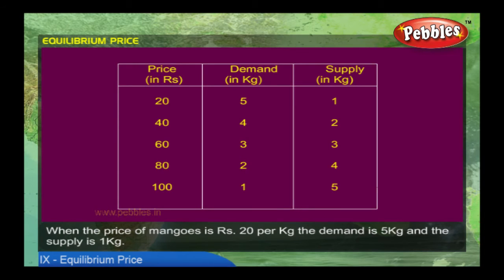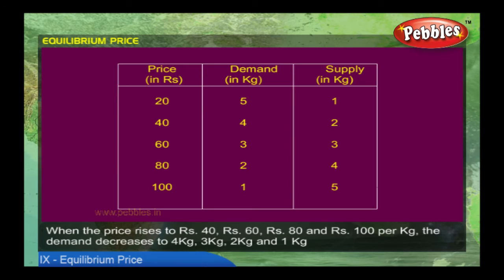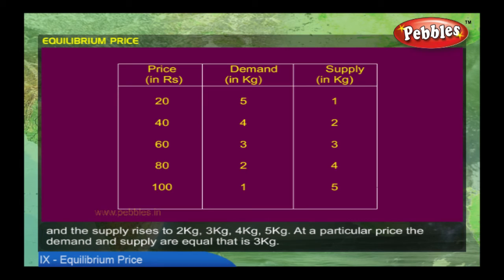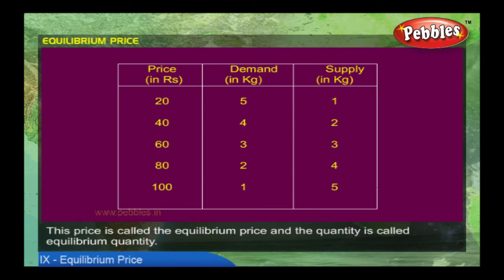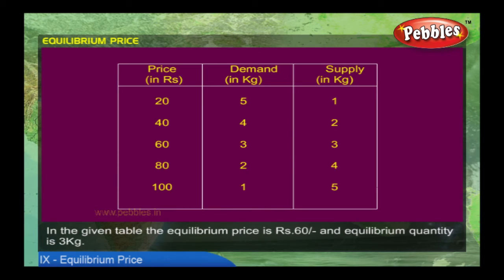When the price of mangoes is rupees 20 per kg, the demand is 5 kgs and the supply is 1 kg. When the price rises to rupees 40, rupees 60, rupees 80, and rupees 100 per kg, the demand decreases to 4 kg, 3 kg, 2 kg, and 1 kg, and the supply rises to 2 kg, 3 kg, 4 kg, and 5 kg. At a particular price, the demand and supply are equal — that is 3 kgs. This price is called the equilibrium price and the quantity is called the equilibrium quantity. The equilibrium price is rupees 60 and the equilibrium quantity is 3 kgs.